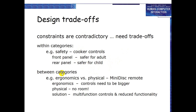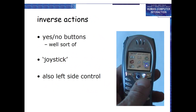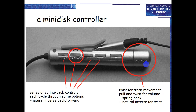Between categories, the trade-off is ergonomics versus physical space. When we apply ergonomics rules, we have to compromise physical rules. The example is a mini disk — a small walkman-type device where space is very limited.